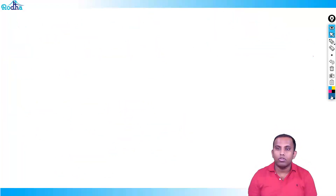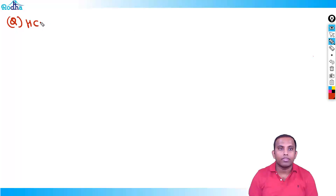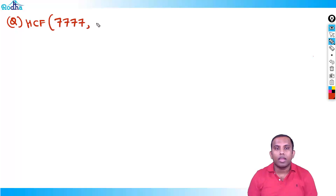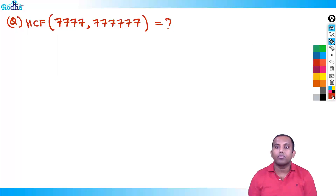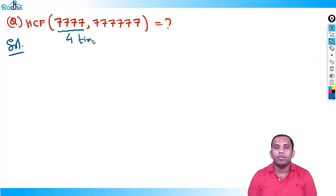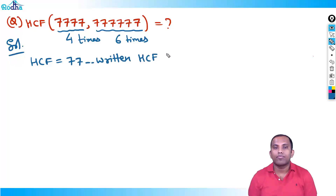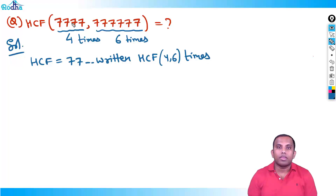Next concept: HCF of 777 written 4 times and 777 written 6 times. The general rule is that the HCF equals 777 written HCF(4, 6) times. HCF of 4 and 6 is 2, so 777 written 2 times, which is 77. The answer is 77.